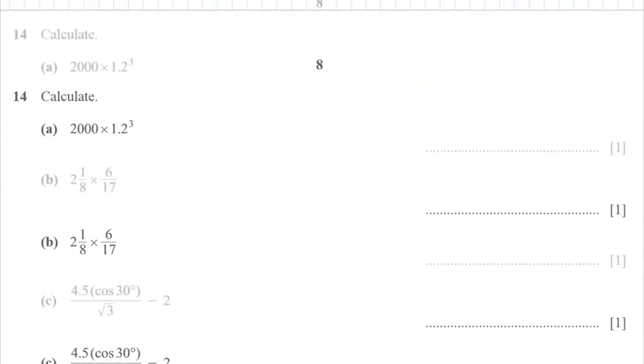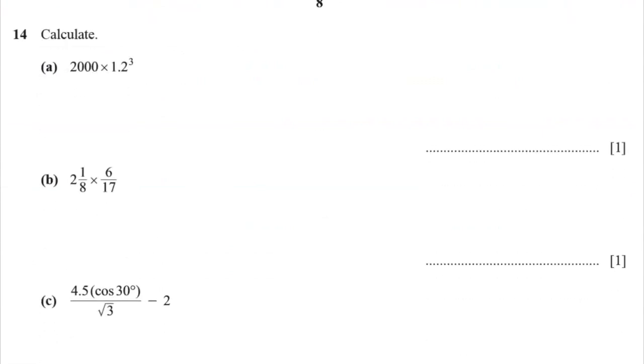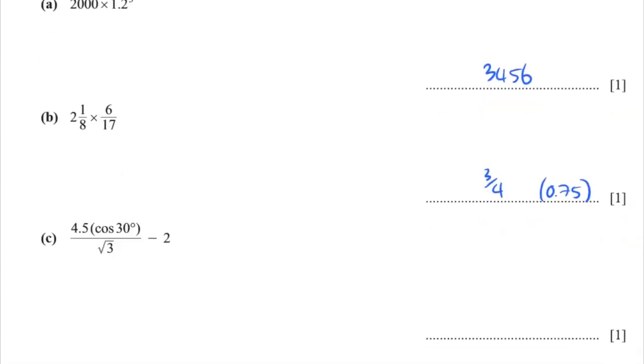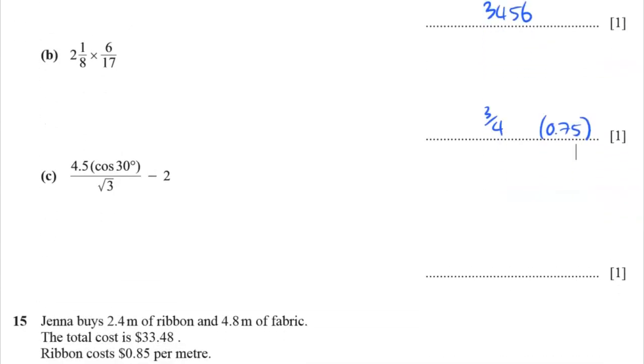Question 14. Can you use a calculator? So you have to be able to enter this into a calculator correctly. And what you will get is 3456. For the second one, we're going to get 3 quarters or 0.75. And for the third one, we would get 1 quarter or 0.25.